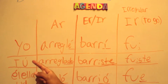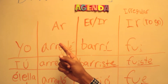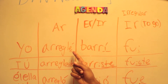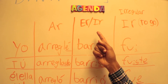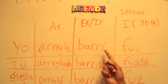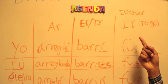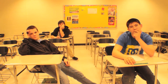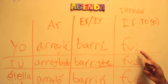This is the chart. For the yo form, AR verbs end with an I with an accent mark. For ER and IR endings, they also end with an I with an accent mark. For the irregulars, like ER, it contributes to FUE with no accent mark.